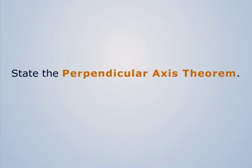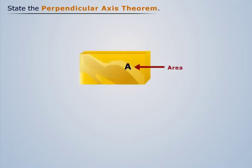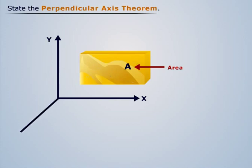State the perpendicular axis theorem. Let us consider a rectangle of area A in the XY plane. As you can see in the figure, the Z axis is perpendicular to the area.